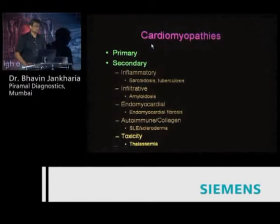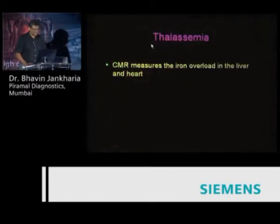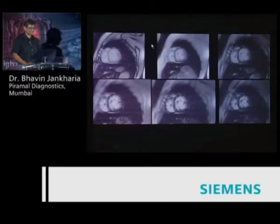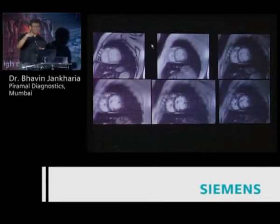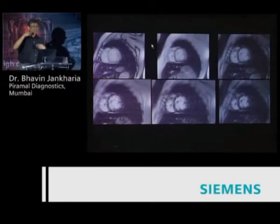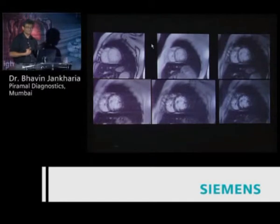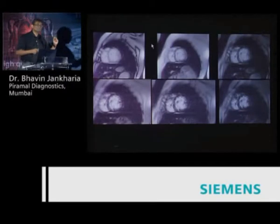Lastly we come to thalassemia, where cardiac MR has completely changed survival. Thalassemia is common in our country and people do a good job controlling it with blood transfusions, but once patients live beyond the age of 15-18 years, all that blood transfusion results in iron overload. The reason they die at the age of 20-25 is because of heart failure due to iron overload in the heart.